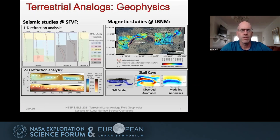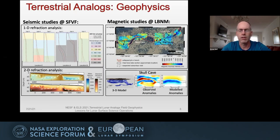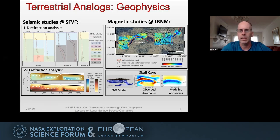In the San Francisco volcanic field, we've done two different types of seismic surveys: short geophone lines of about 115 meters and longer nodal lines a kilometer in length. This is active seismic refraction. In the upper left you can see examples of the analysis — 1D refraction analysis on the geophone lines — and below it is 2D refraction analysis on the 1-kilometer-long nodal lines.